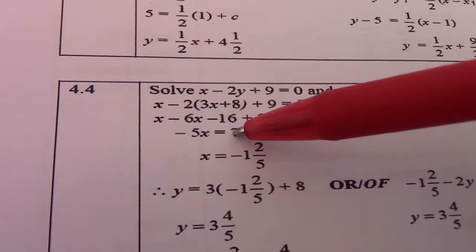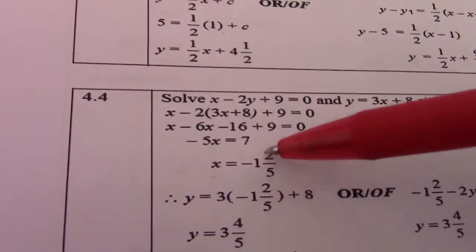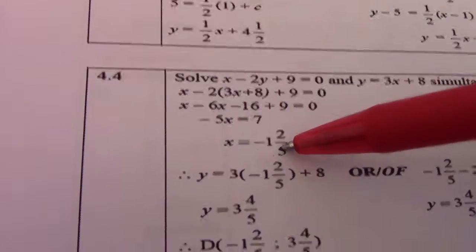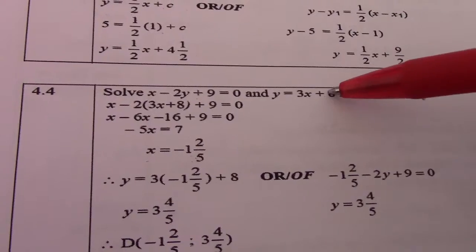If I take it across, it becomes positive 7. So x equals 7 divided by negative 5, or negative 1 and 2 over 5. Then I can substitute in that equation to get the y value.